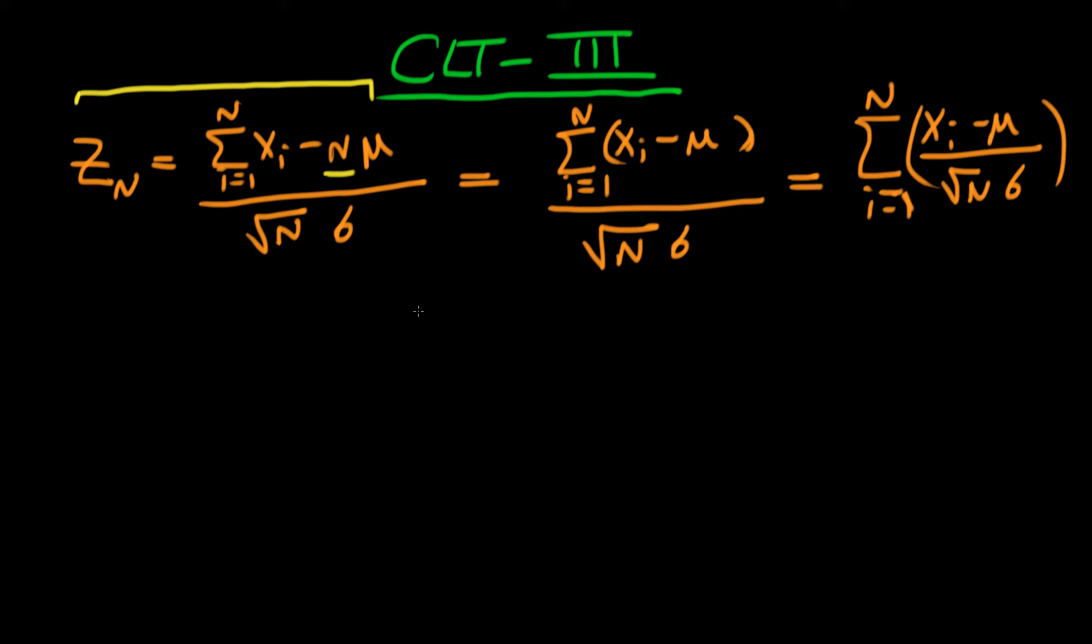And what I'm now going to do is I'm going to write this out as the sum from i equals 1 to n of yi divided by root n, and I'm going to explain why I've done that in a moment.